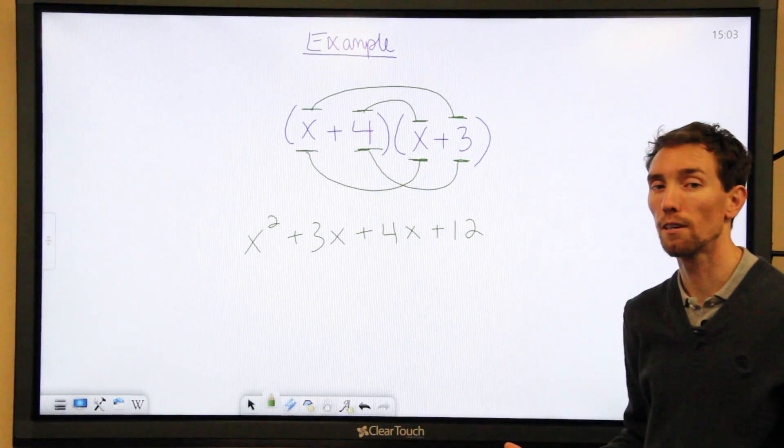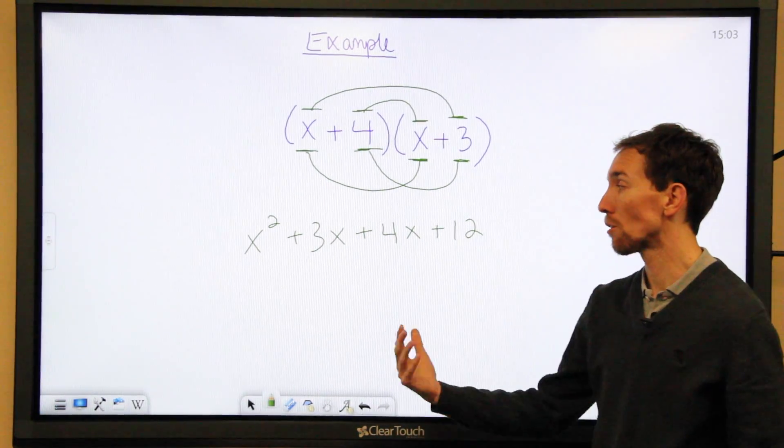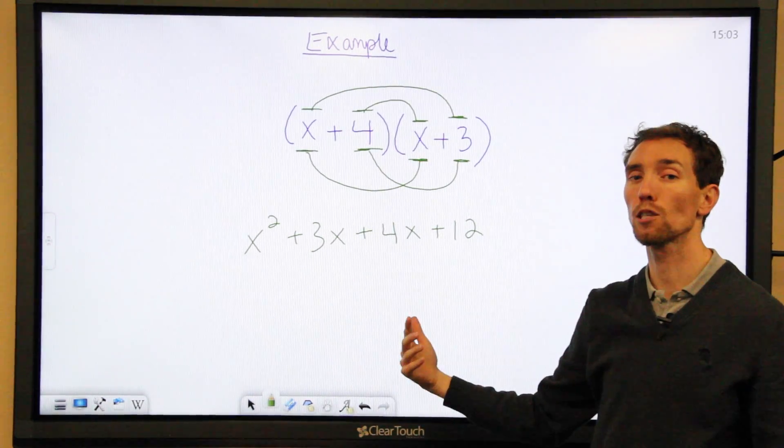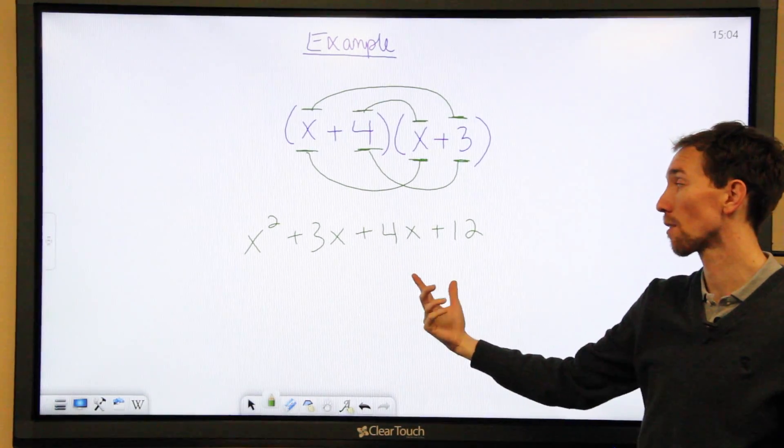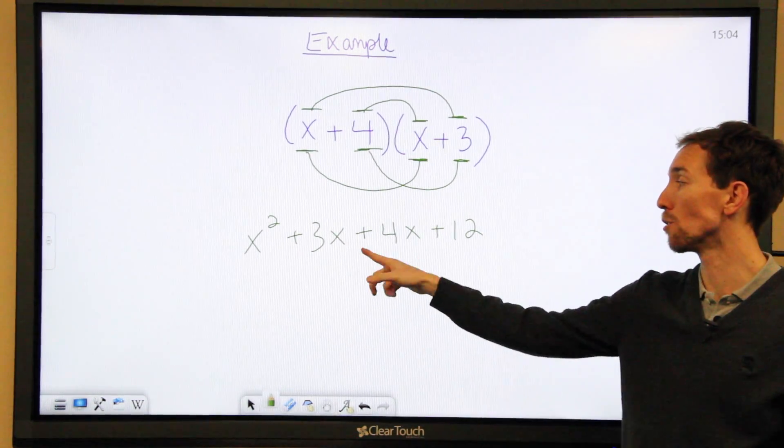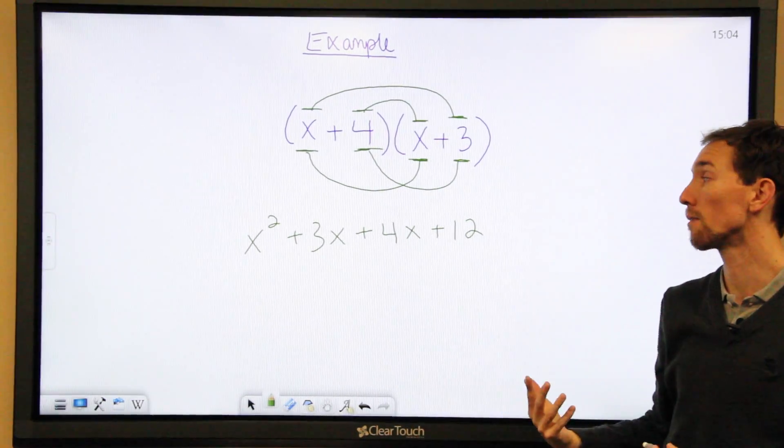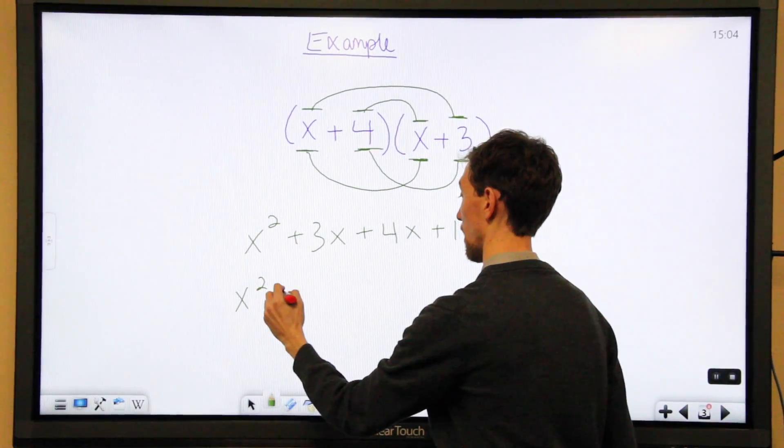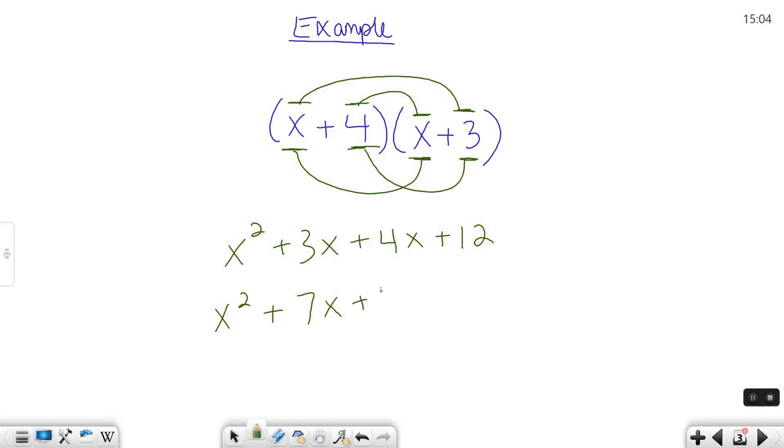you want to see if you can simplify even further by combining like terms. Like terms are ones that have the same variable and exponent. So if you have x squared, there's nothing else in this that has an x squared in it. If you look at x though, there's two terms that have an x in there. There's 3x and 4x. So we can combine those. The way you do that is you use the operation in the middle of them. Basically, you have 3x's plus 4x's. So that will get you 7x's. So x squared plus 7x. And then we have 12. There's no other numbers by themselves, so we can just copy that down. And then we have our final simplified expression, x squared plus 7x plus 12. Let's try another example.